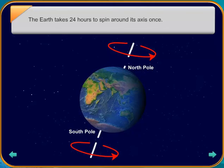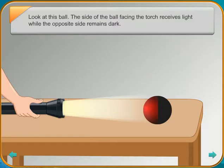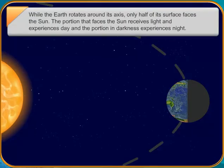If the Earth did not rotate, the areas experiencing day and night would be permanently fixed. Do you know what the circle that divides the day from night on the globe is called? It is called the circle of illumination. When the Sun is overhead at any point on the Earth's surface, the time at that place is 12 noon.